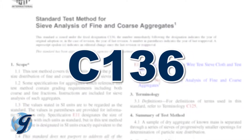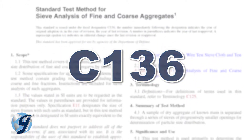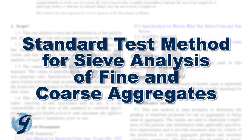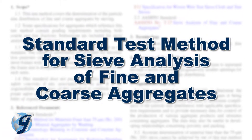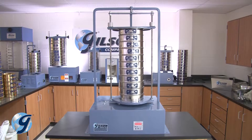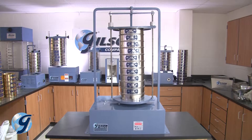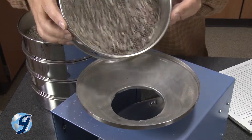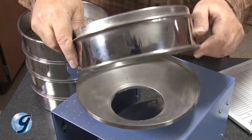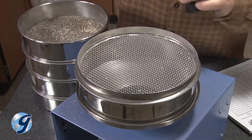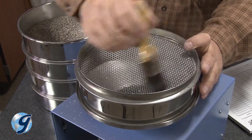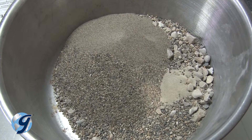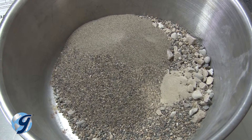For ASTM Standard C-136, Standard Test Method for Sieve Analysis of Fine and Coarse Aggregates, the manual provides a bigger picture of the test method. Sieving equipment, sieving technique, and sieve maintenance are discussed. Part of this section also provides a definition and function of fineness modulus that goes beyond just the calculations.